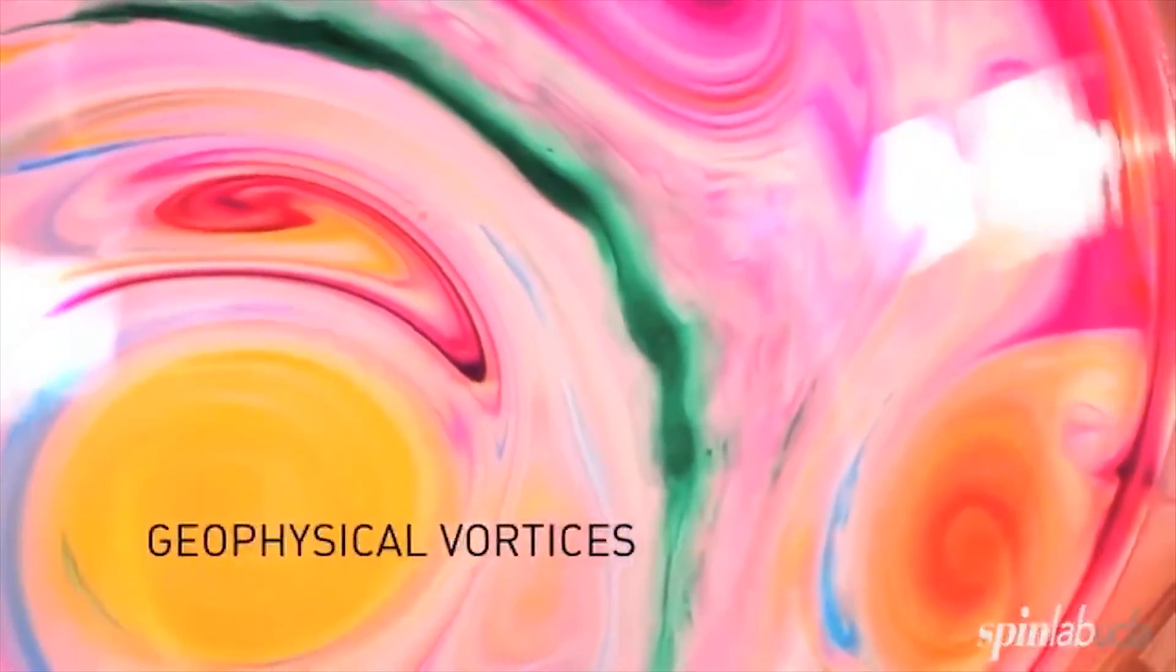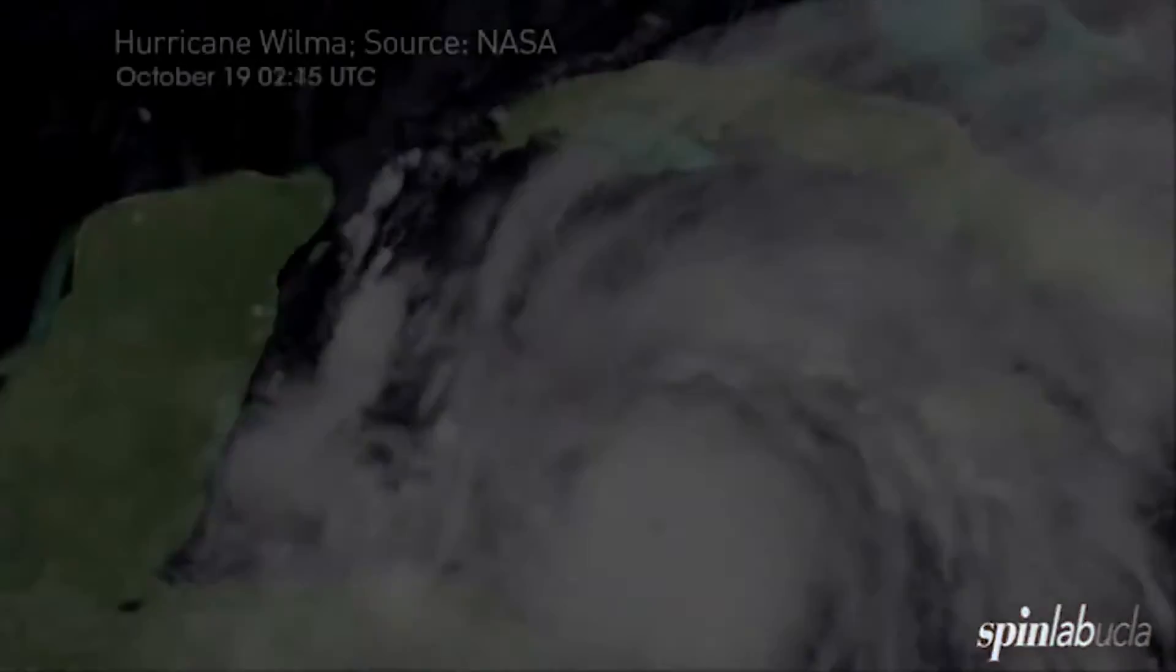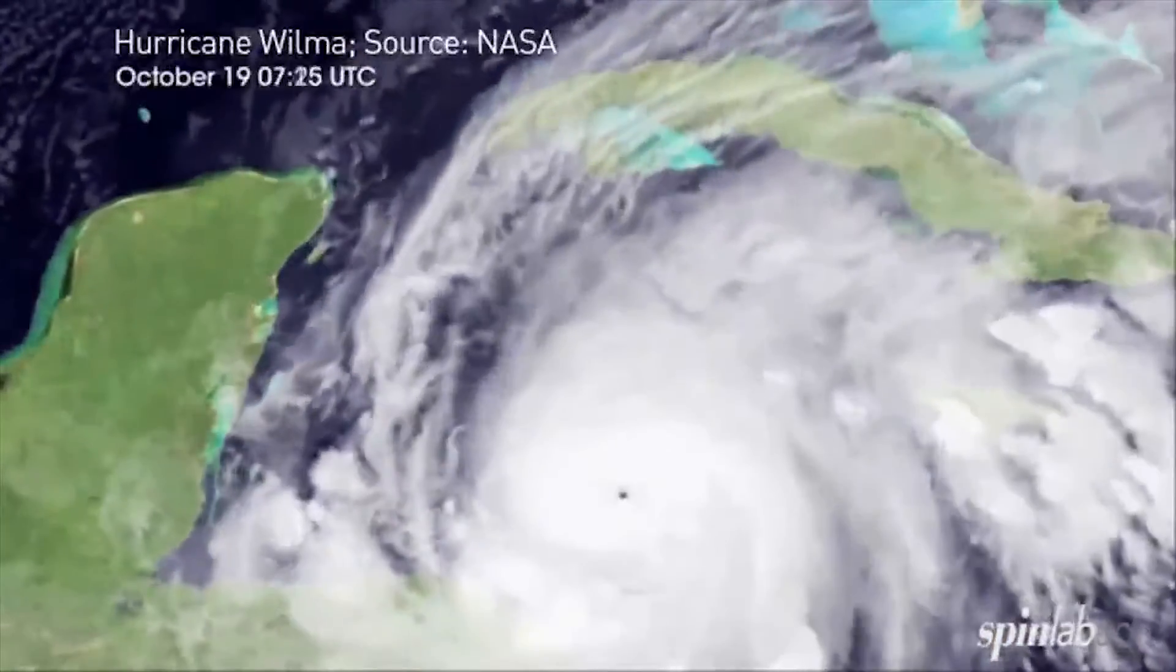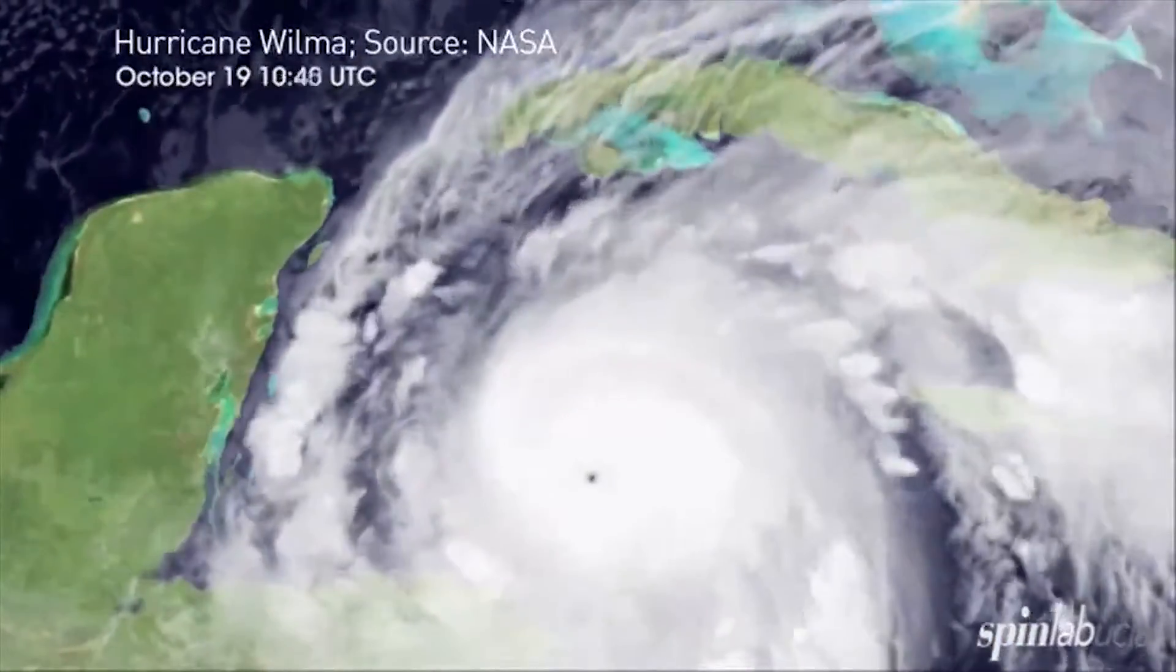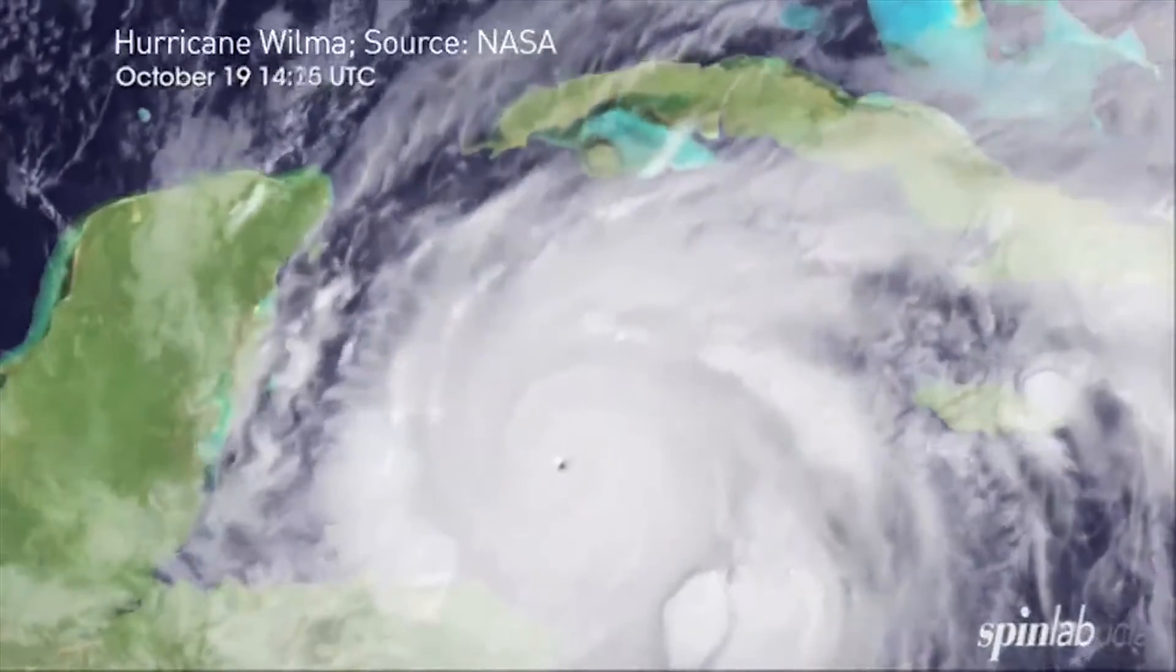In almost all geophysical fluid dynamical systems, we see swirling flows. These are called vortices, and we see them in Earth's atmospheres, such as hurricanes.